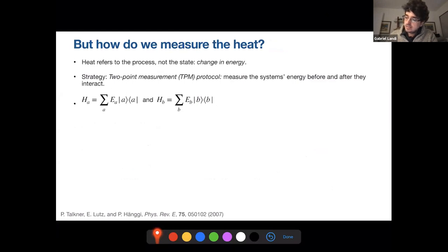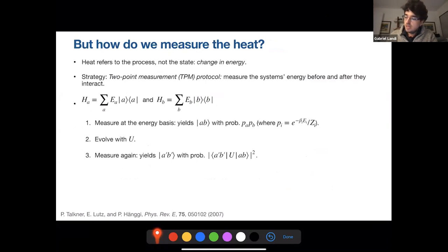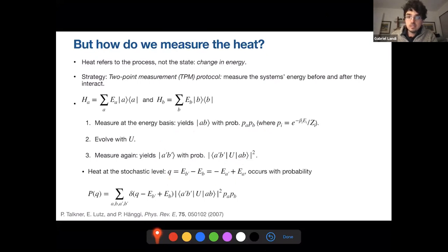So how do we measure heat? Well, the standard way would be a two-point measurement. We have two qubits, A and B, with eigenthings here, energies and states. And then we measure them, evolve, and measure them. So we first measure them in the energy basis. We get some probabilities, which are the thermal probabilities. We evolve them with the unitary of the process that we want. And then we measure again and get some kind of transition matrix from AB to A prime B prime. And at the stochastic level, heat is then defined as the energy difference between the system A or B. So either the final energy of B minus the initial one, or the same thing with the opposite sign for A. And then putting all of this together, we can now construct a heat distribution, which is the probability that some heat flows during this process determined by this unitary U.